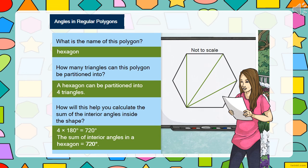Let's try it with this next shape. What is the name of this polygon? That's right, it's a hexagon. How many triangles can this polygon be partitioned into? That's right, it's four. And we now know that we can calculate the interior angles by multiplying 180 degrees by 4, giving us 720 degrees.